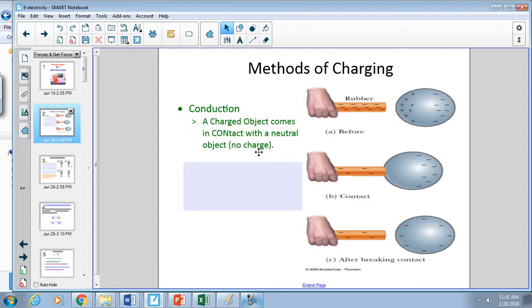We have conduction. Conduction works very similar to how it does in thermal energy. Whenever we have a charged object, something with a positive or negative charge, come in contact with a neutral object which has the charges evenly distributed, the neutral object will take on the same net charge as the object. So negative, negative; positive, positive.